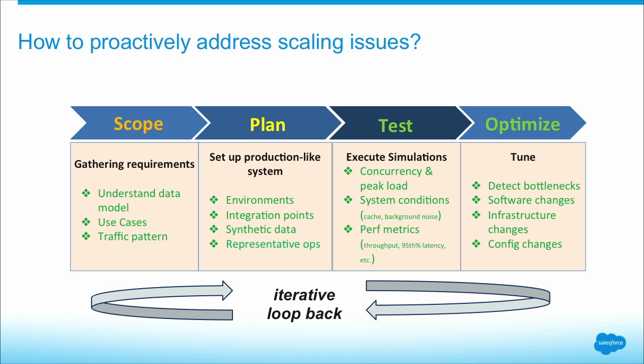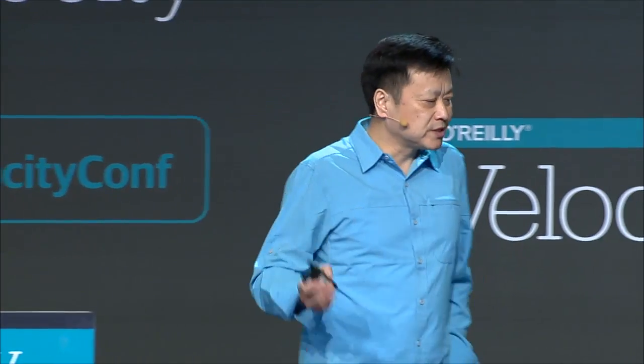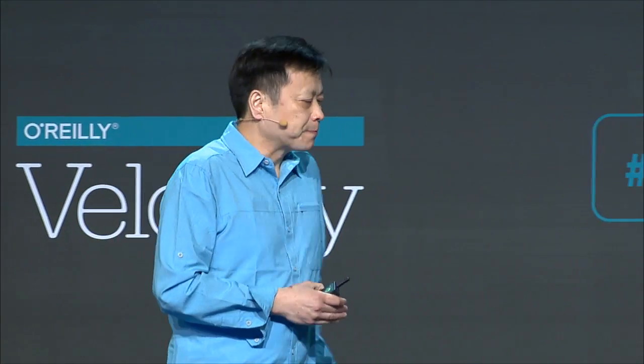This process needs to be iterative, because in one iteration you may find a performance bottleneck, fix your code, and in the next iteration find that your infrastructure is going to have a scalability challenge. Through this iteration you can expose lots of limitations that you never saw before in your normal average customer size.